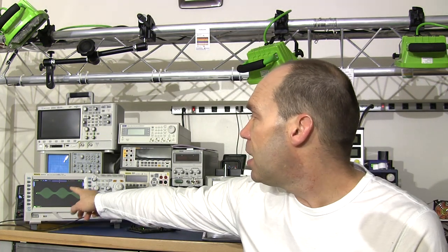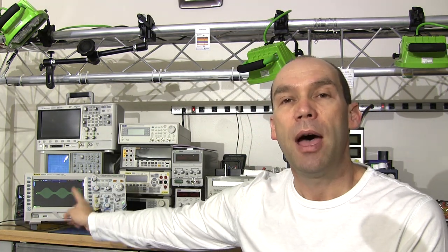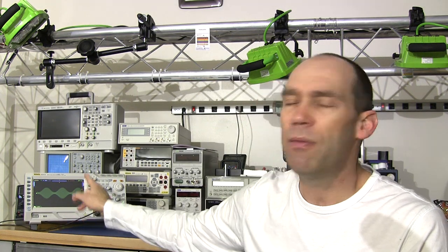I then also received the Rigol DS2000 series oscilloscope. This is something I've purchased recently because the specs are very similar to the Agilent that I've got. It's a direct competitor to the Agilent and you get a lot of scope for the money, it has to be said.